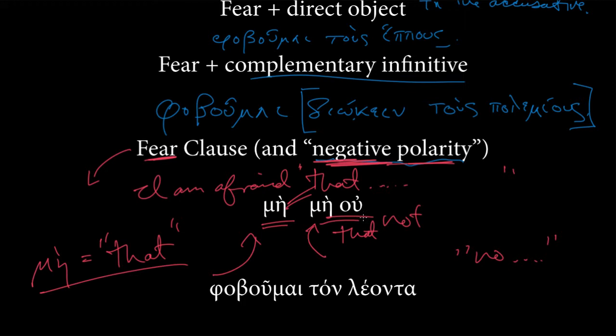We're getting μή to not mean negative at all. It doesn't equal no like it normally does. Instead, it's just going to equal that in this context. μή, I'm afraid. I was afraid that, and then that not is μή οὐ.